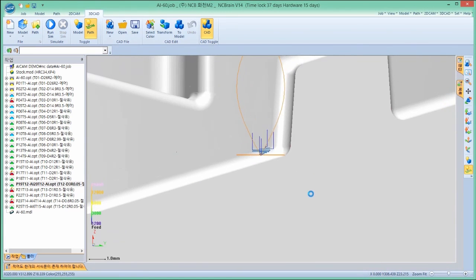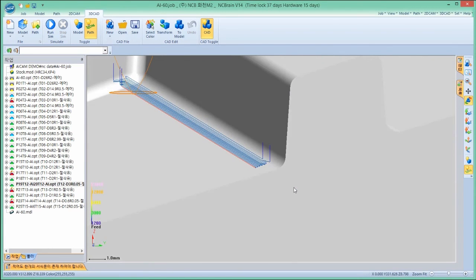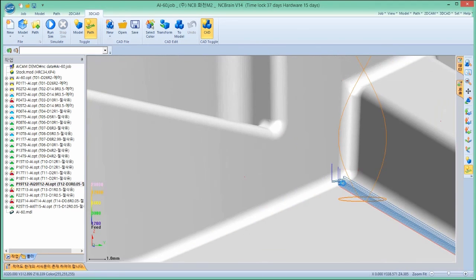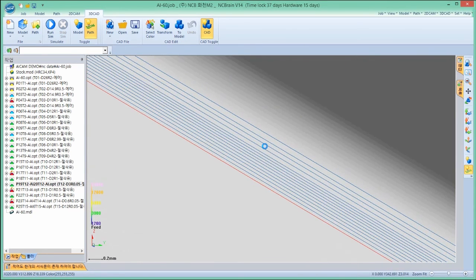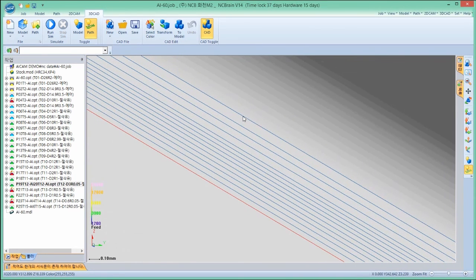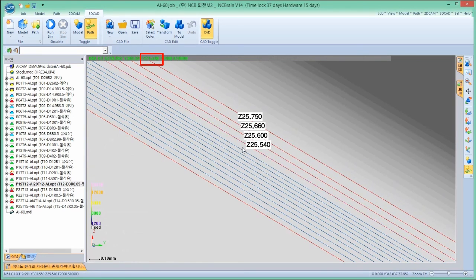You can see the declined area in the model. I'll click each toolpath to find out the result. The toolpath data for z-height is 0.09, 0.06, 0.03 differences.